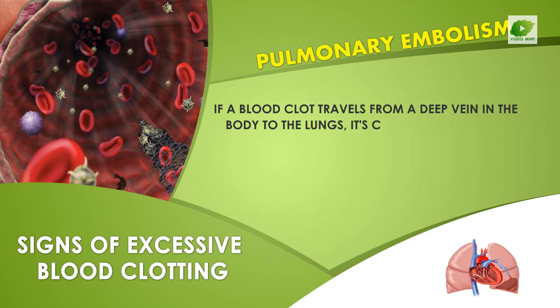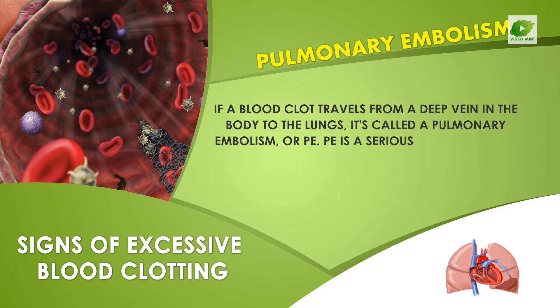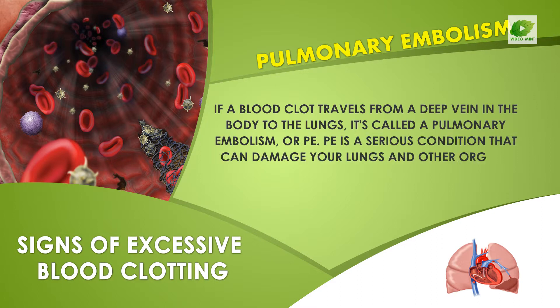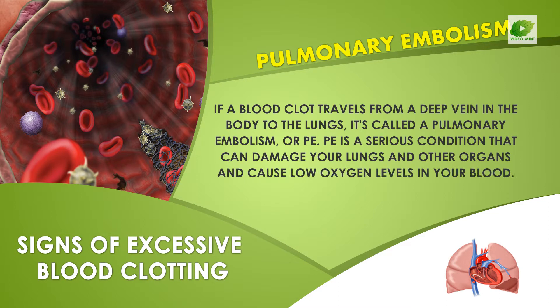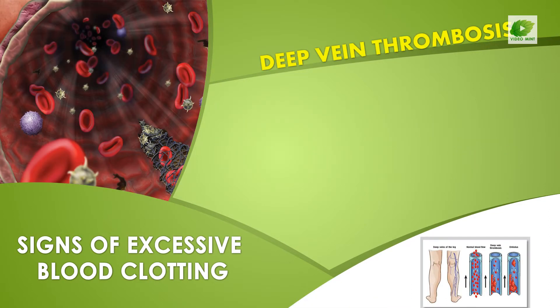Pulmonary embolism: if a blood clot travels from a deep vein in the body to the lungs, it's called a pulmonary embolism. This is a serious condition that can damage your lungs and other organs and cause low oxygen levels in your blood.